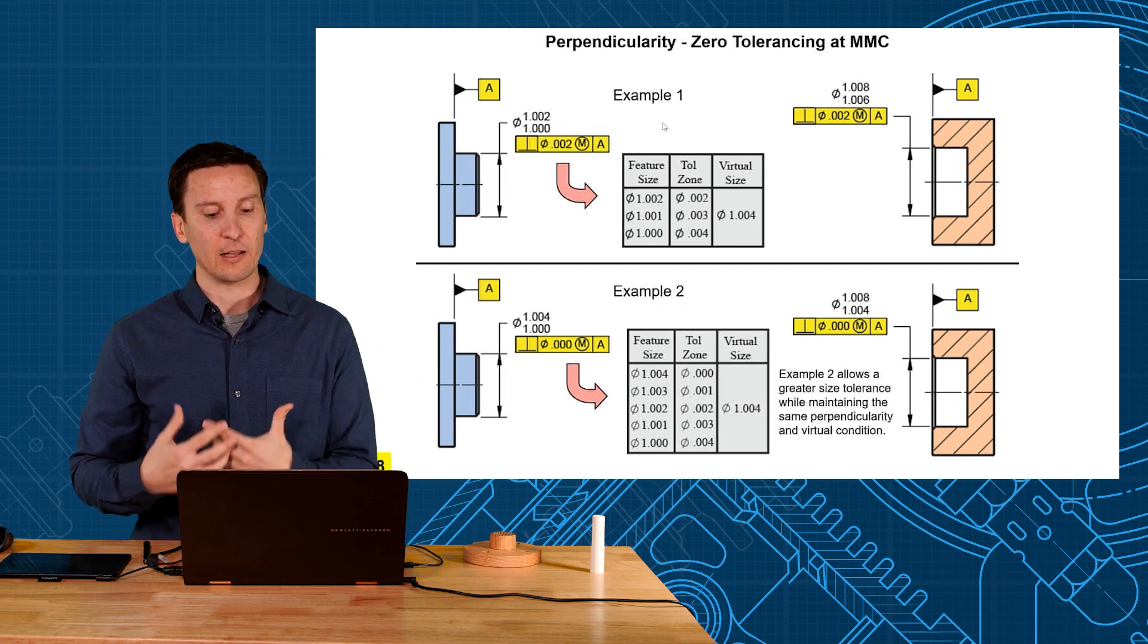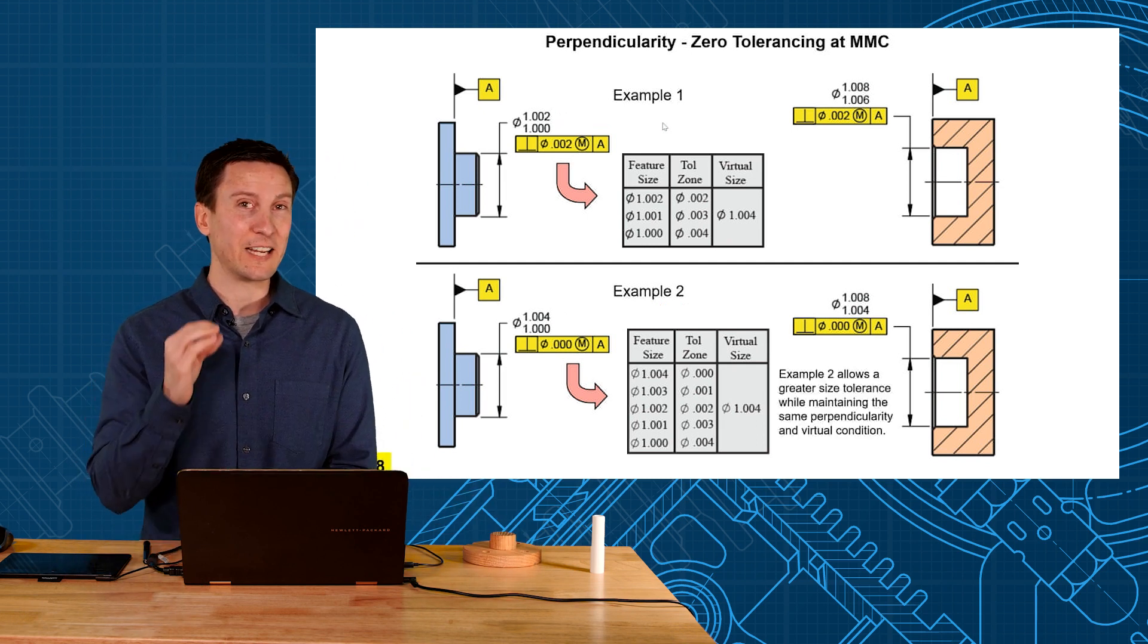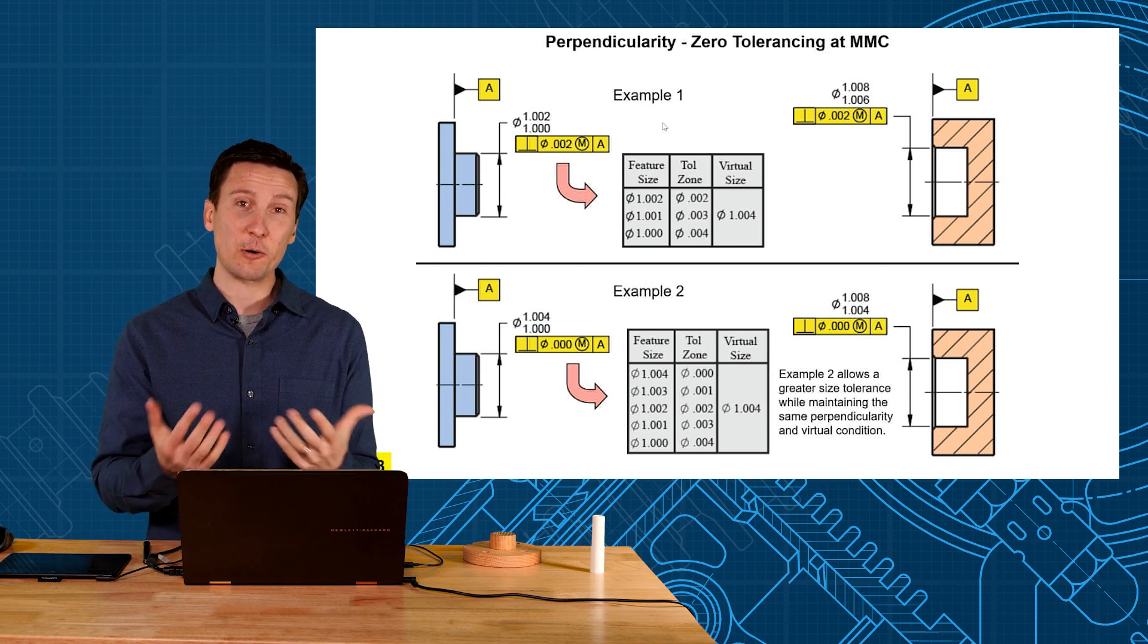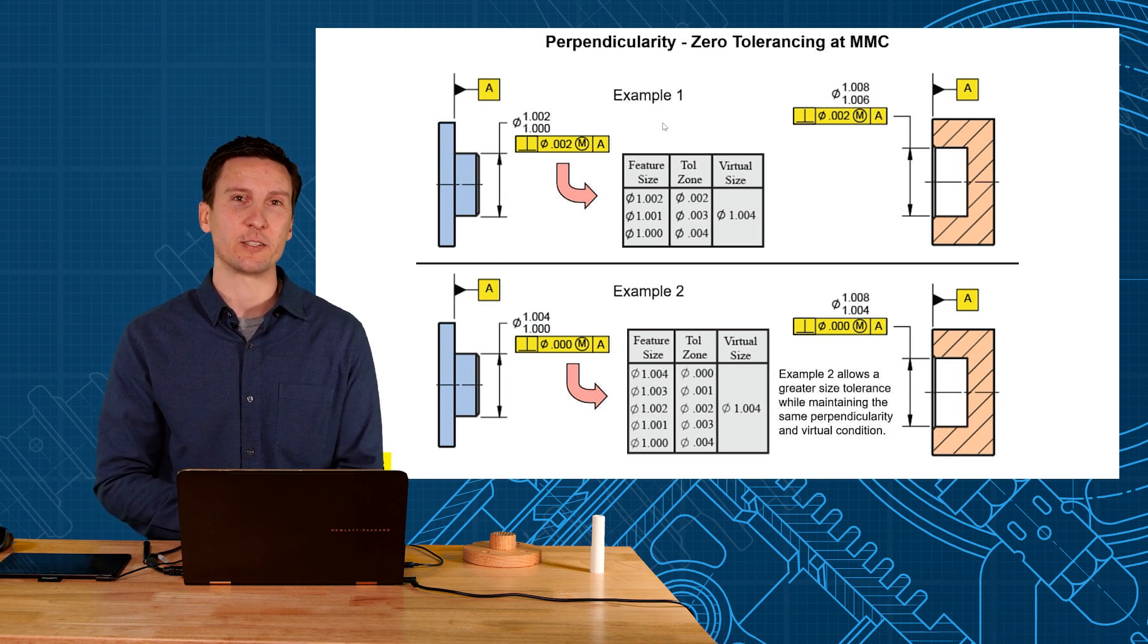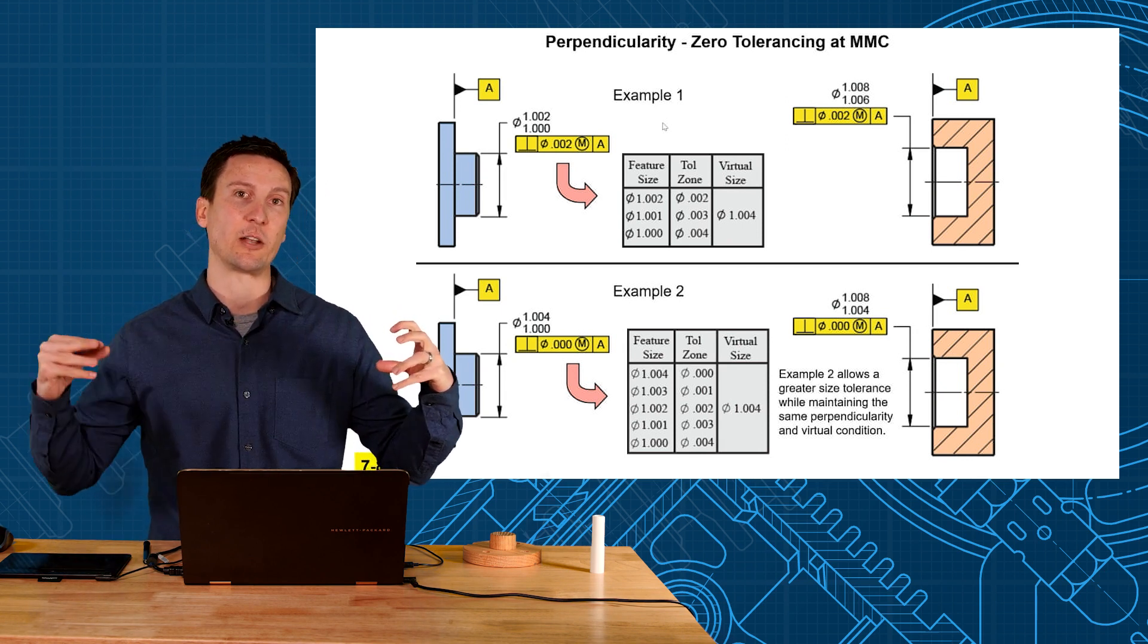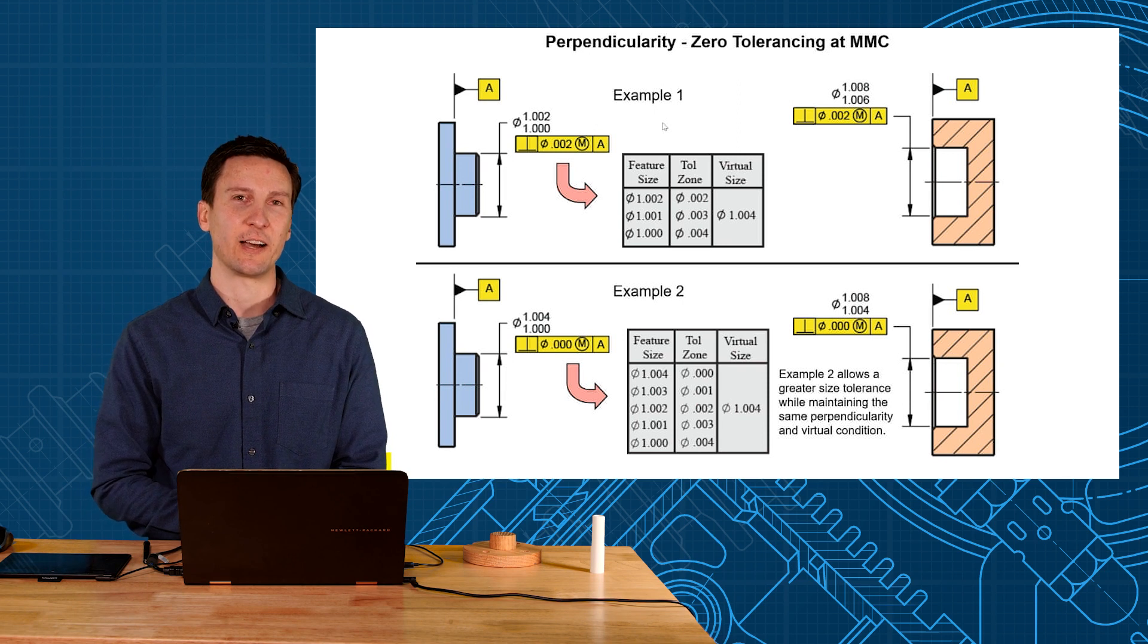So example two allows a greater size tolerance while maintaining the same perpendicularity and the virtual conditions. So zero at MMC can be a really cool concept. We use it on perpendicularities. We also use it on round turn shafts. We're trying to keep things centered as well. Interesting idea.